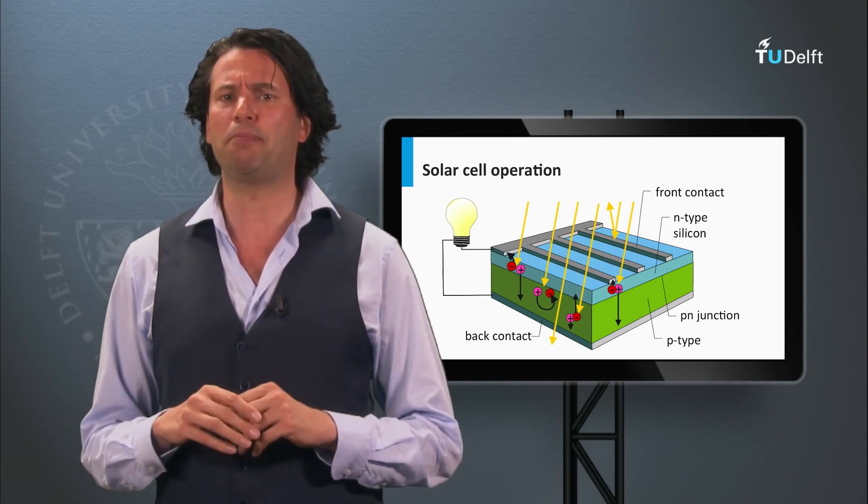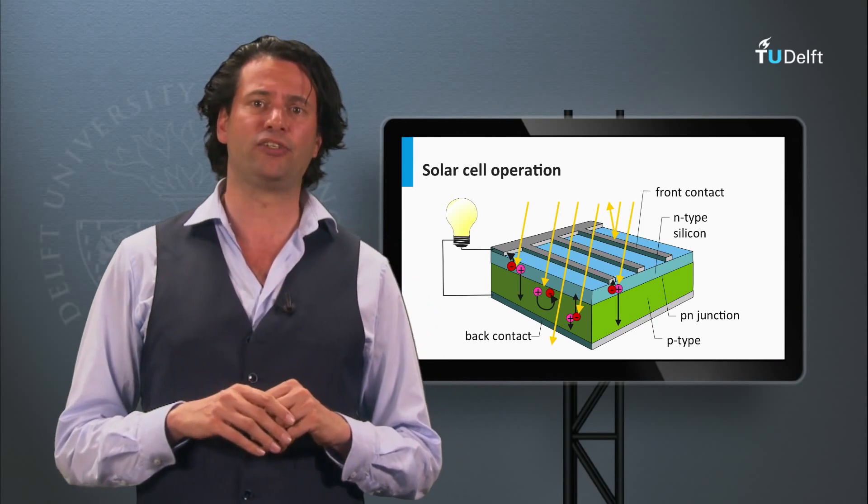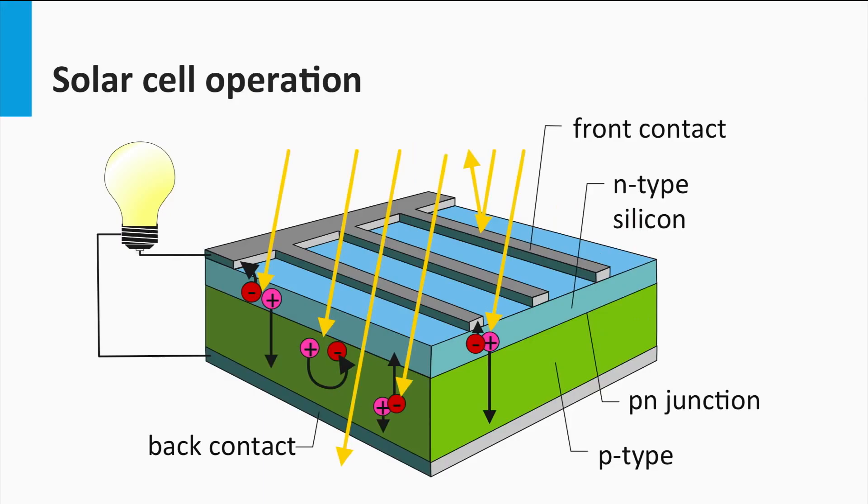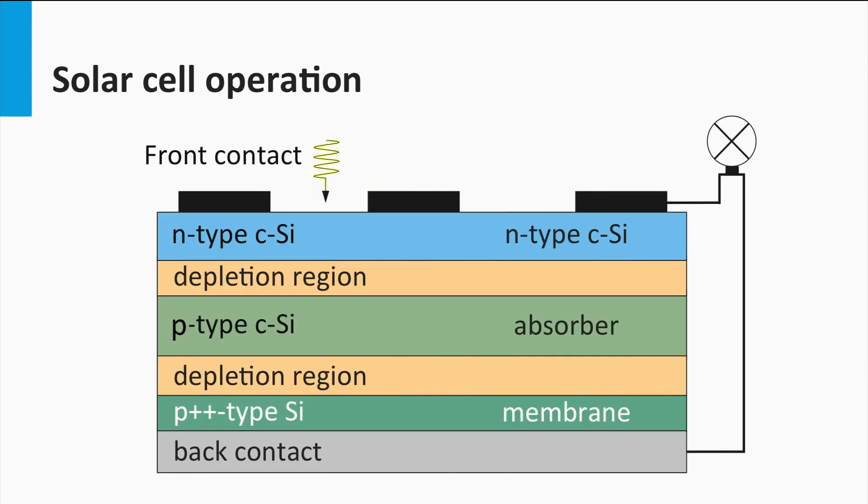Here we see a simplified representation of a silicon-based solar cell. It consists of the crystalline silicon absorber layer, a p-n junction to separate the light-excited charge carriers and a metal front and back contact. Here we see the same structure, but then in a cross-sectional view.